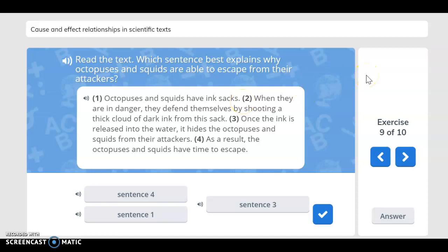Which sentence best explains why octopuses and squids are able to escape from their attackers? Two, when they are in danger, they defend themselves by shooting a thick cloud of dark ink from this sack.